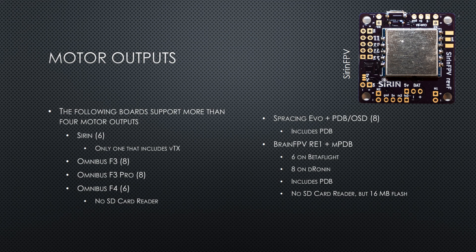Some people might be flying a hexacopter — that still happens. Boards with more than four motor outputs include the Siren, Omnibus F3, F3 Pro, and F4, the SP Racing Evo, and the Brain FPV. Brain FPV has six motor outputs if you run Betaflight, and eight if you run D-Ronin. Notable distinctions: the Siren has a video transmitter, the F4 does not have an SD card reader, and the Evo combo includes a PDB.